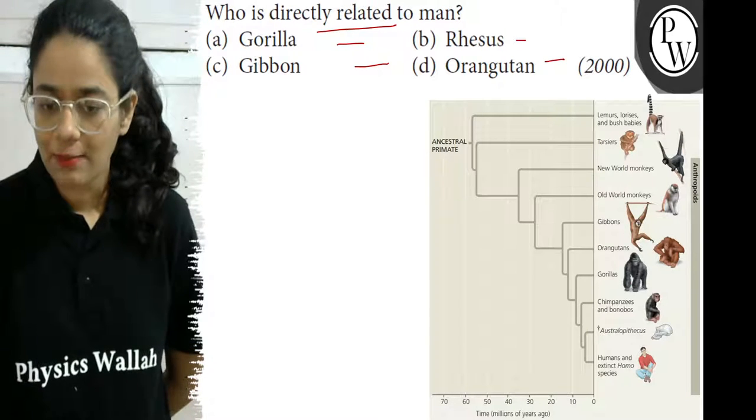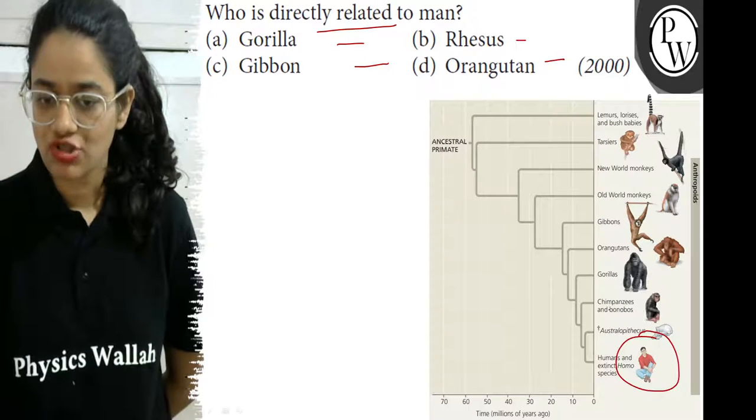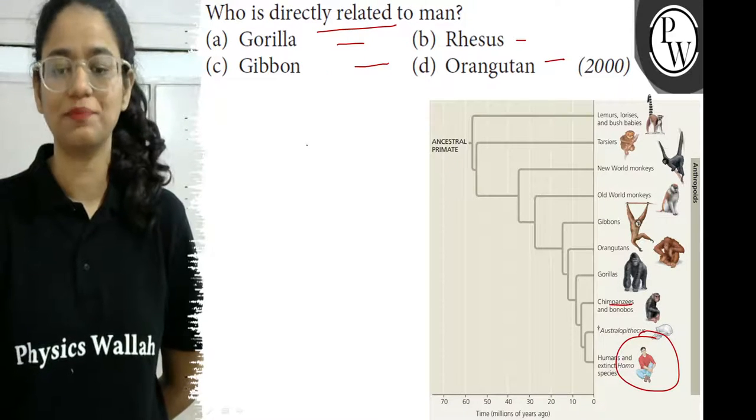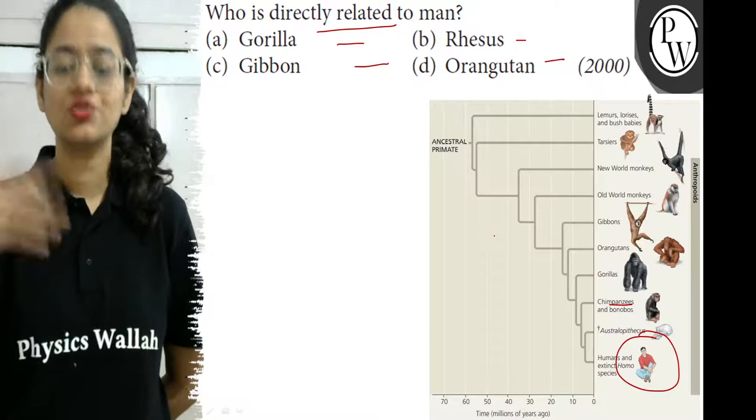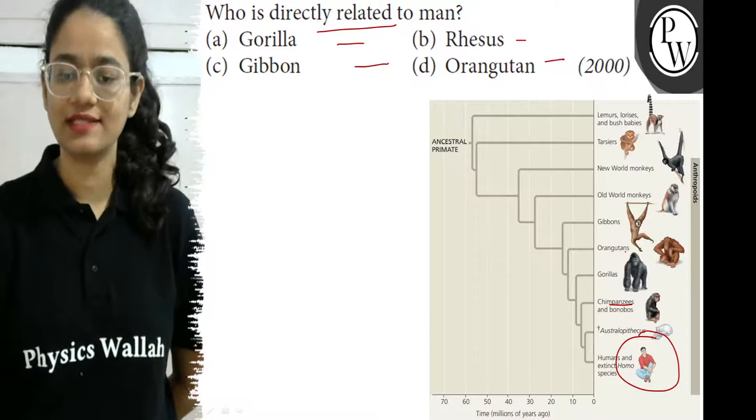Here we can see that man is most closely related to chimpanzee. But chimpanzee has not been given in the options, so we must ignore it. The next step is gorilla.